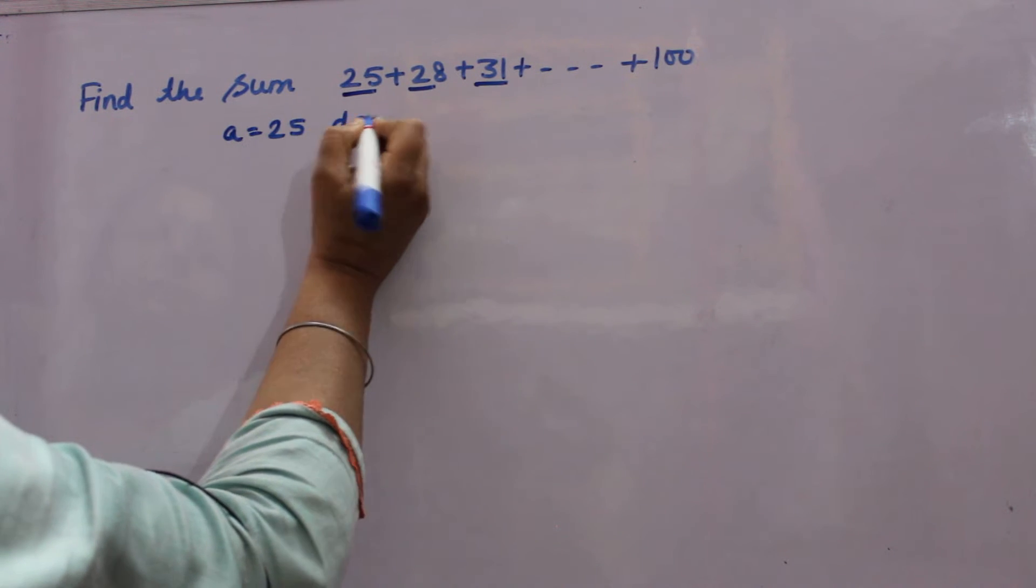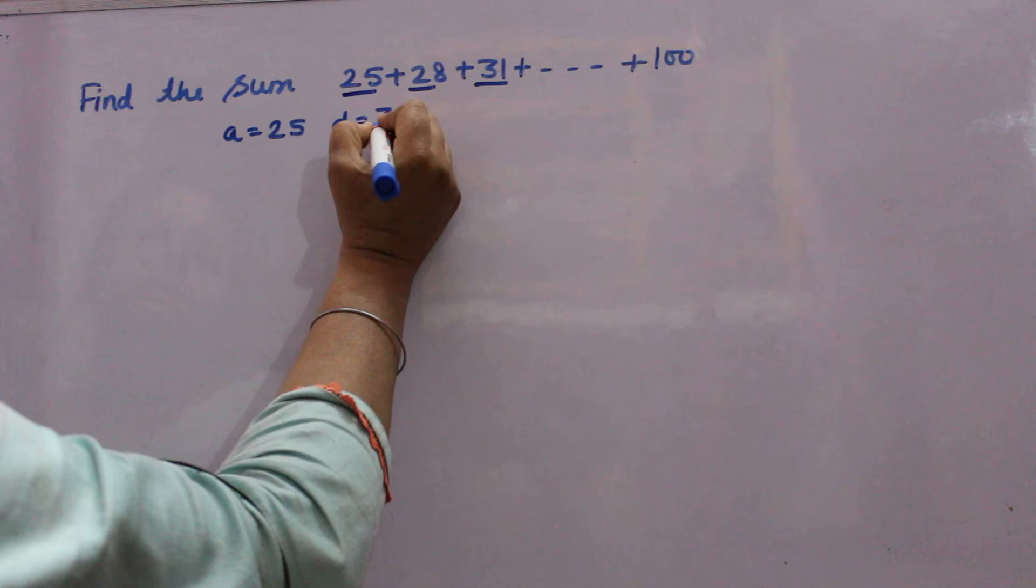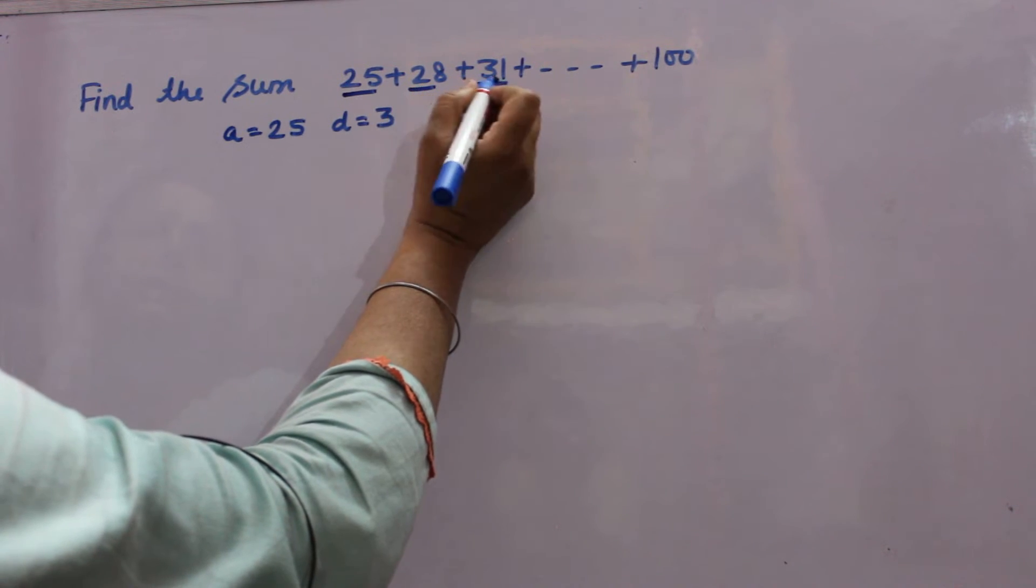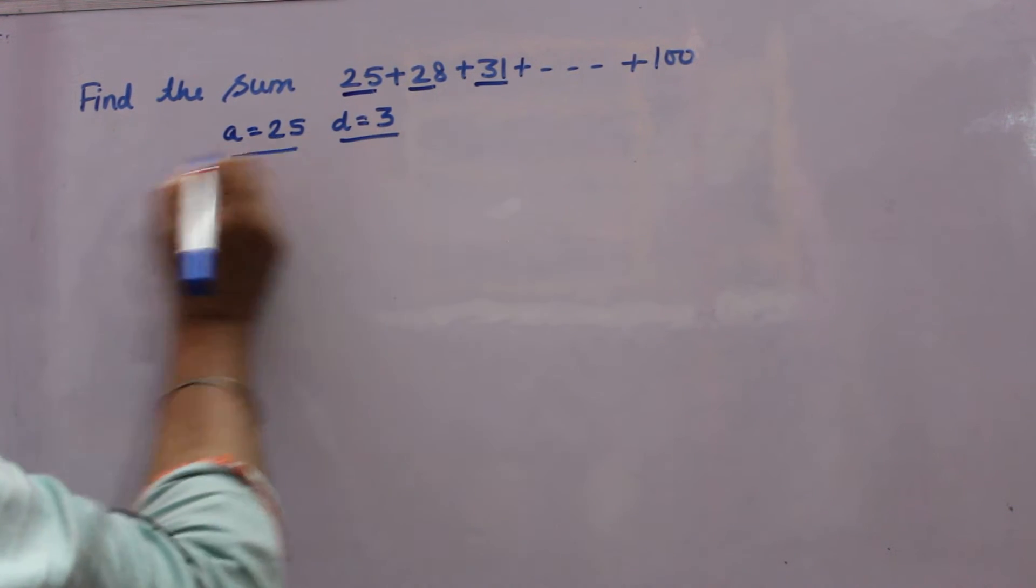B is common difference is same. 28 minus 25 is 3, 31 minus 28 is 3. So this is forming an AP.